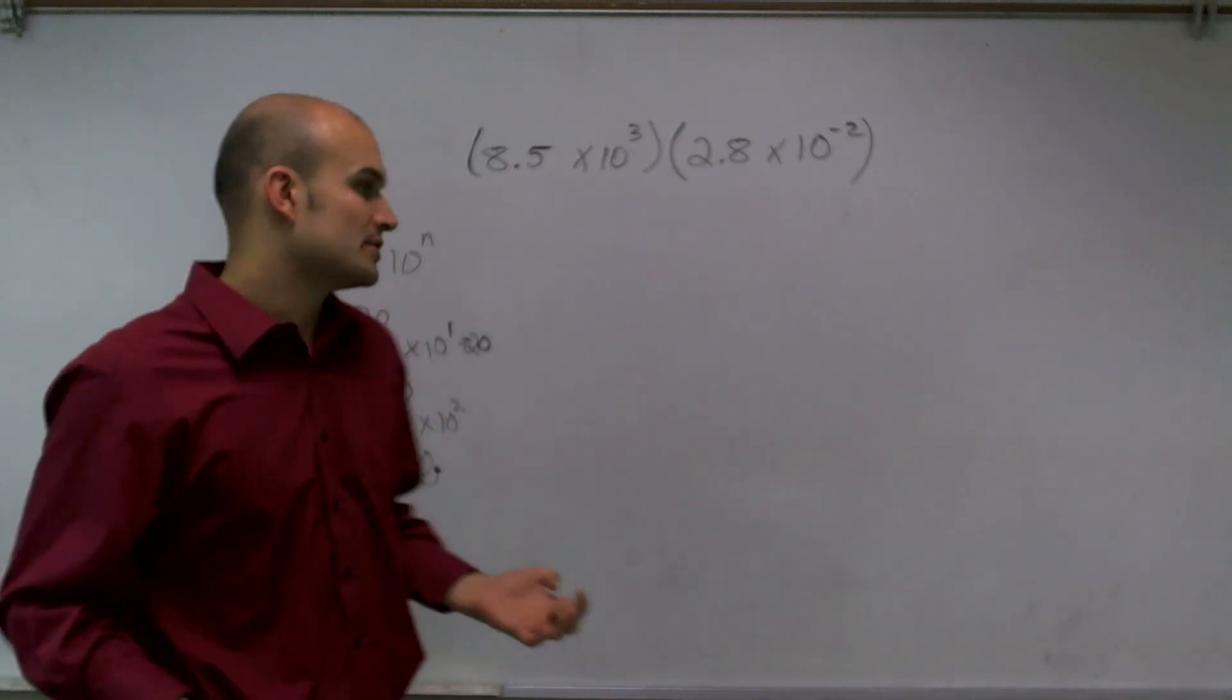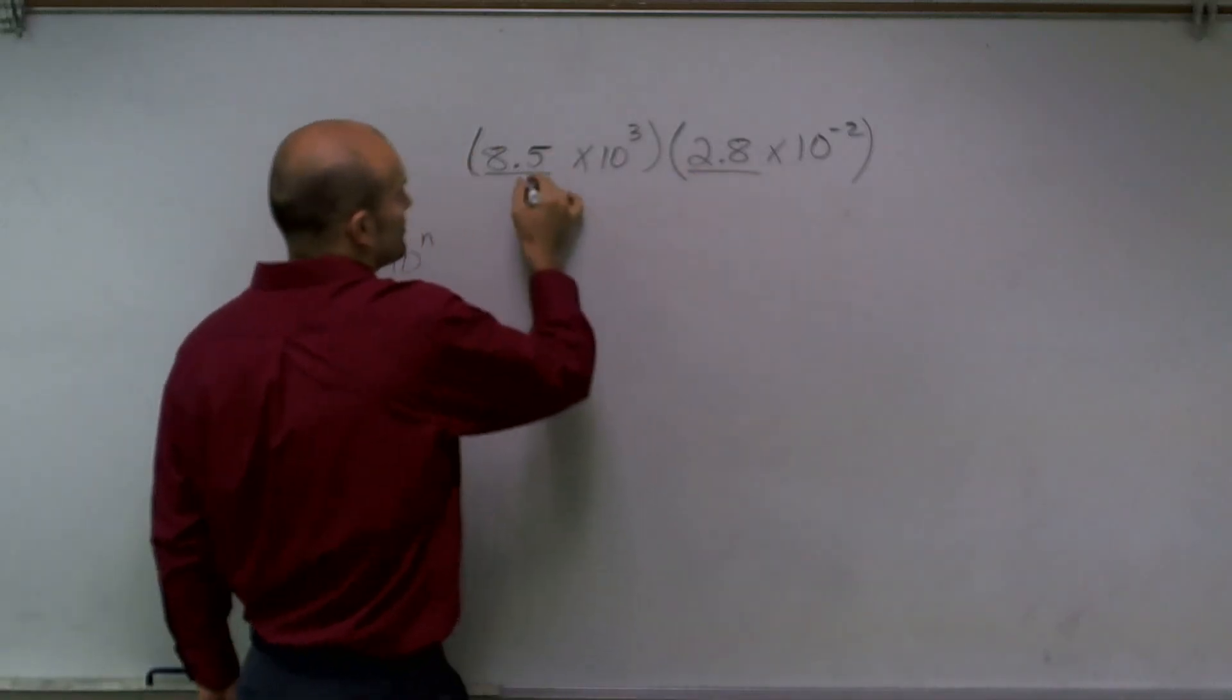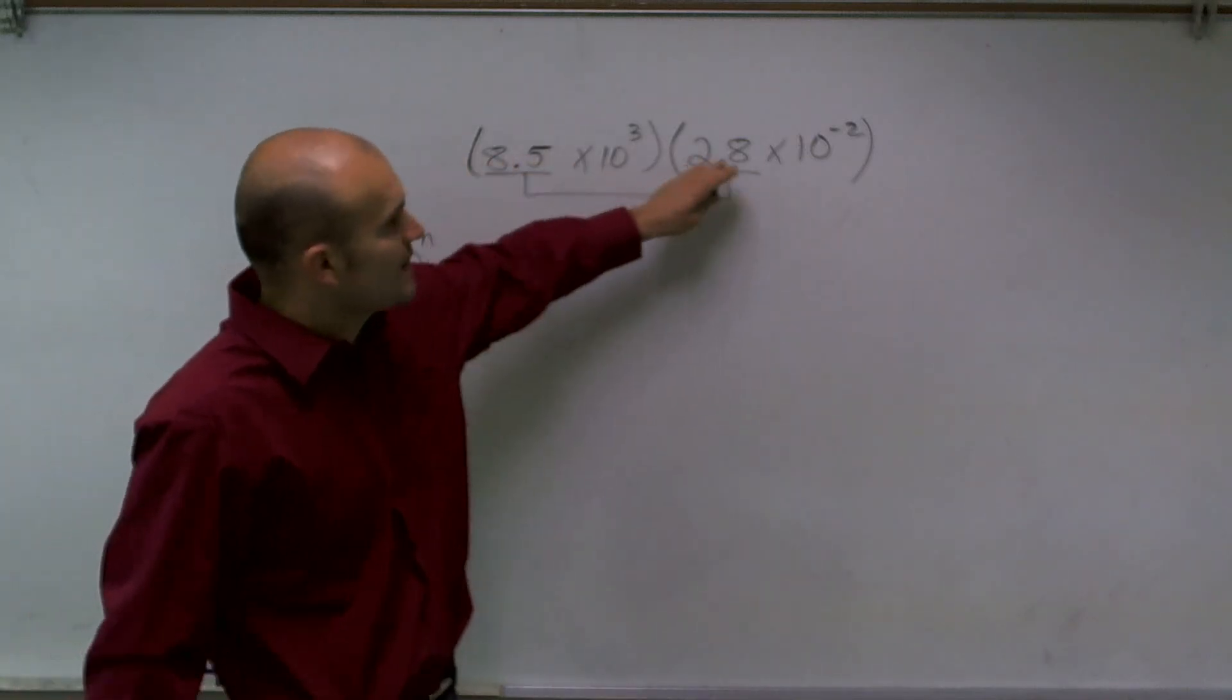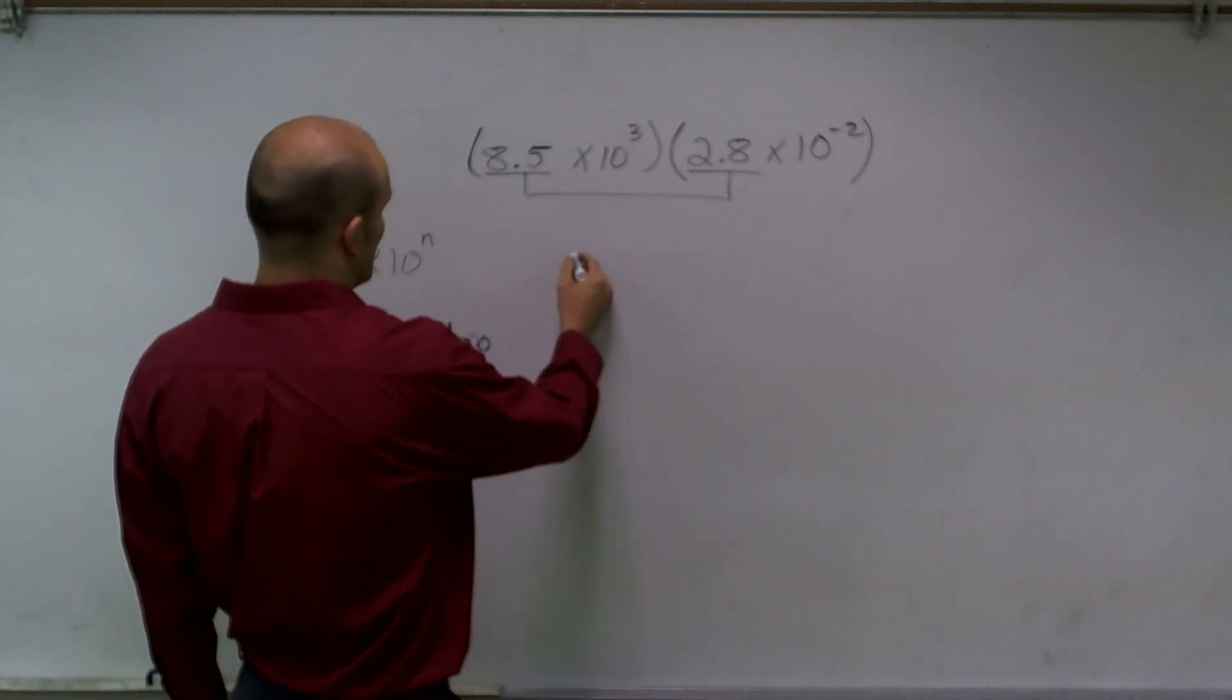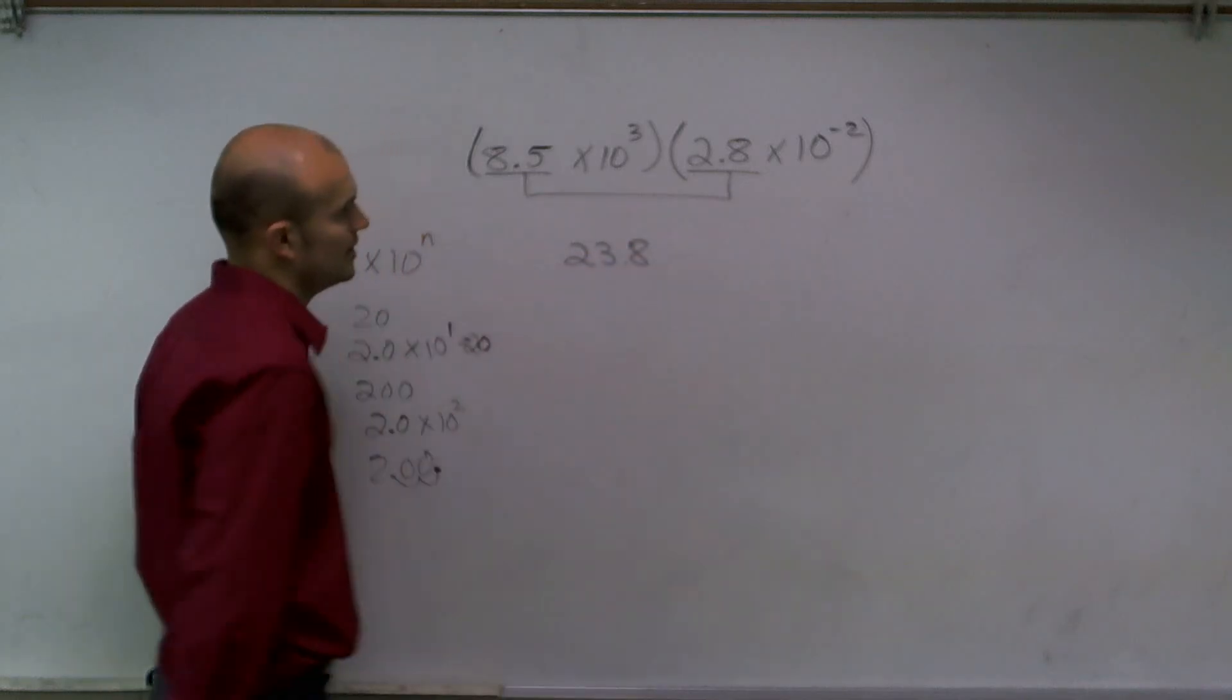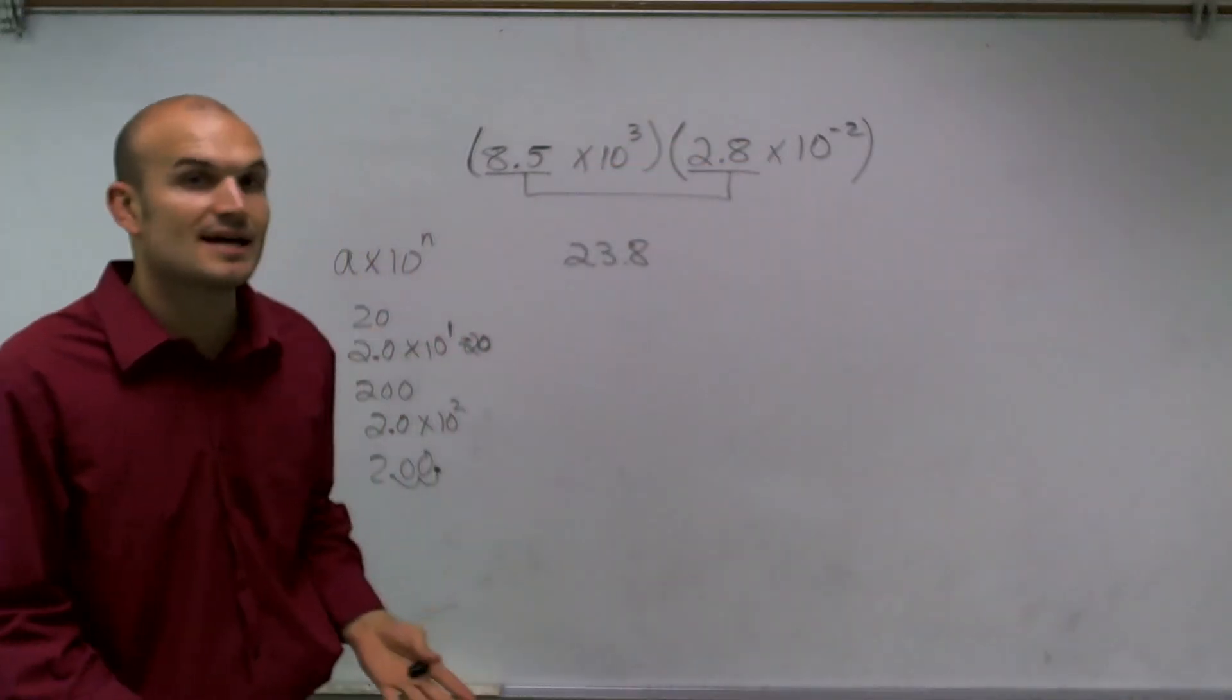When you're multiplying scientific notation, we want to multiply our a's times our a's. Notice these are 2.8 and 8.5. Those are both between 1 and 10. When I multiply them, I get 23.8. Then I'm going to multiply my 10 to the third and 10 to the negative second.